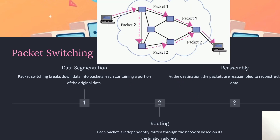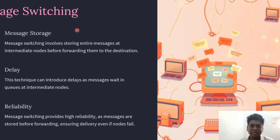In packet switching, data segmentation is performed — the data is broken down into packets, each containing a portion of the original data. Each packet is individually transmitted across the routing path based on its destination address, and finally reassembled at the receiver end to reconstruct the original data. Every packet contains header information such as source address, destination address, and a sequential number.